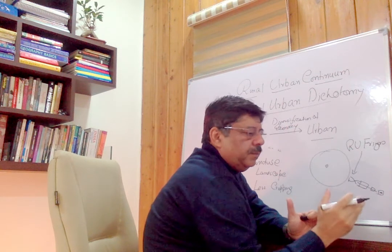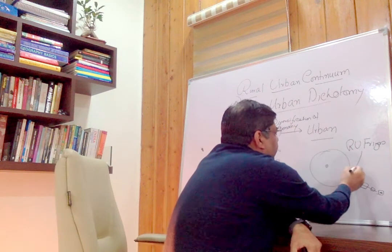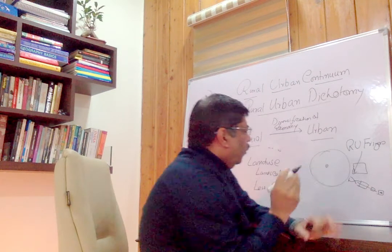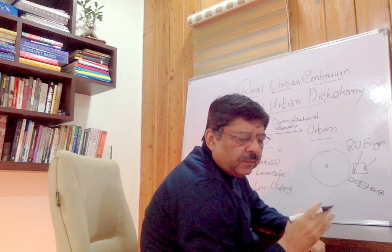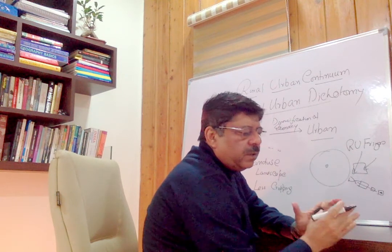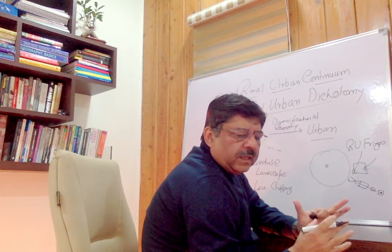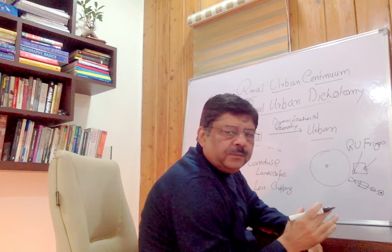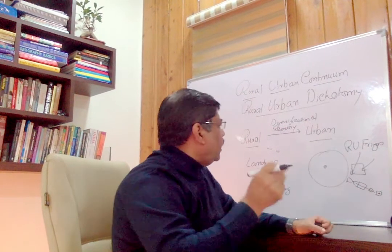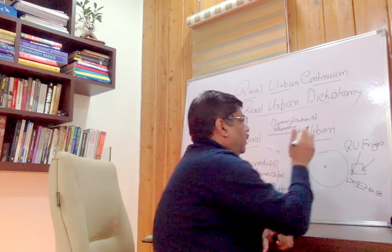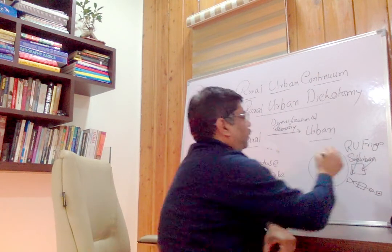This is the rural-urban fringe, also called a peri-urban area. Sometimes you will get a settlement that is more urban than rural — a gated community which is urban in the midst of a rural landscape. This is called the suburban area.